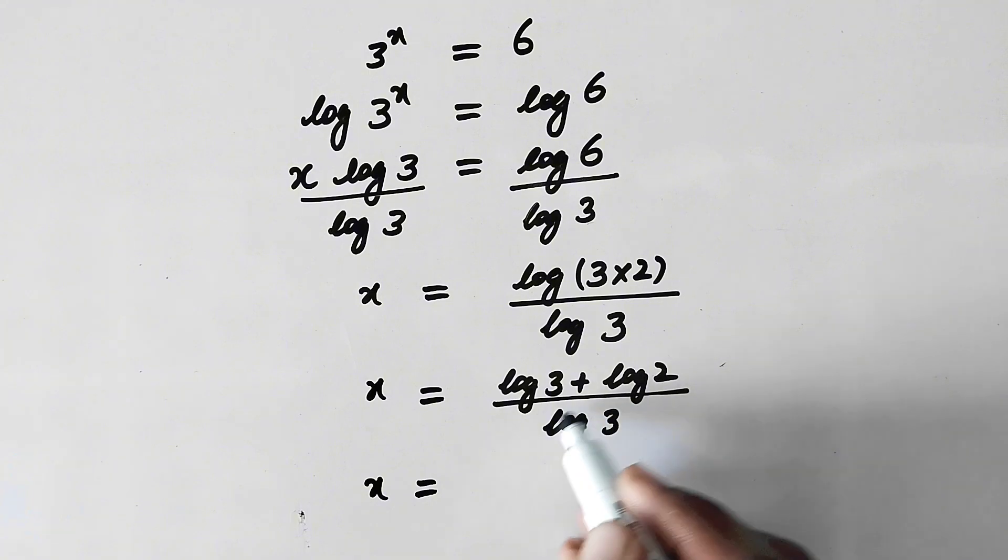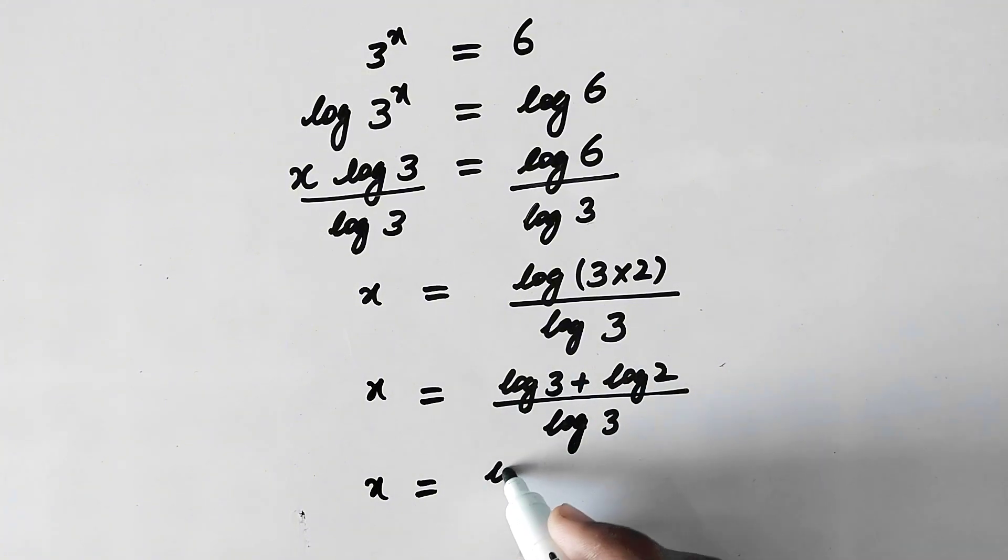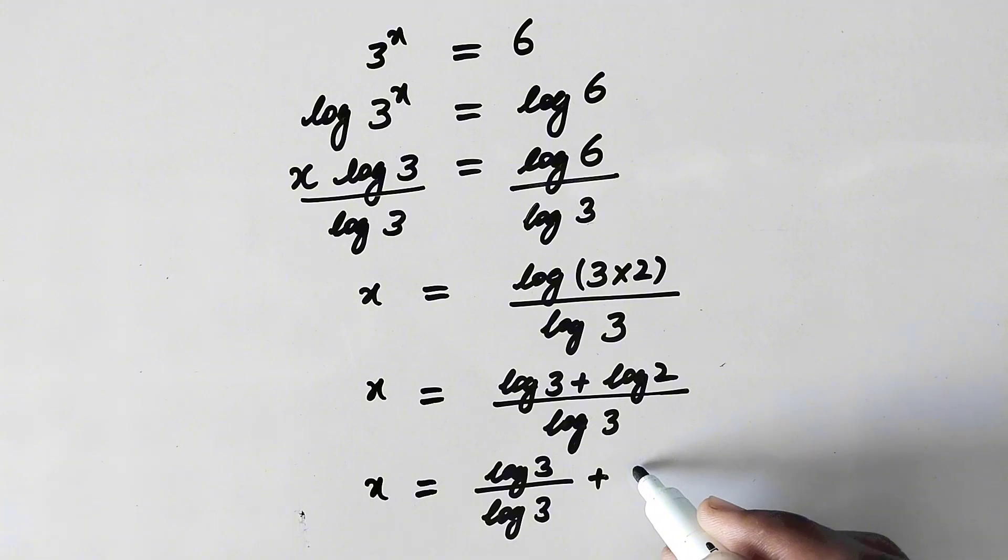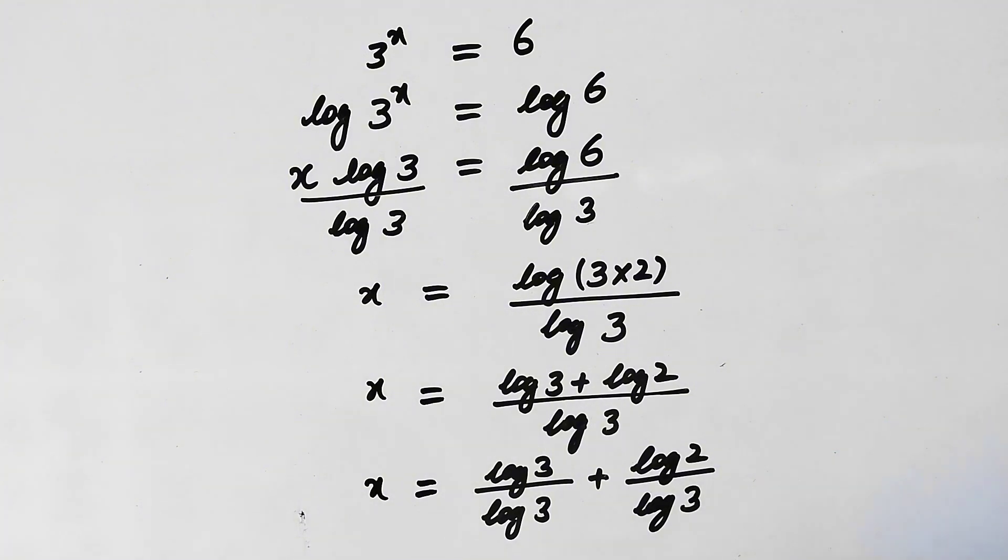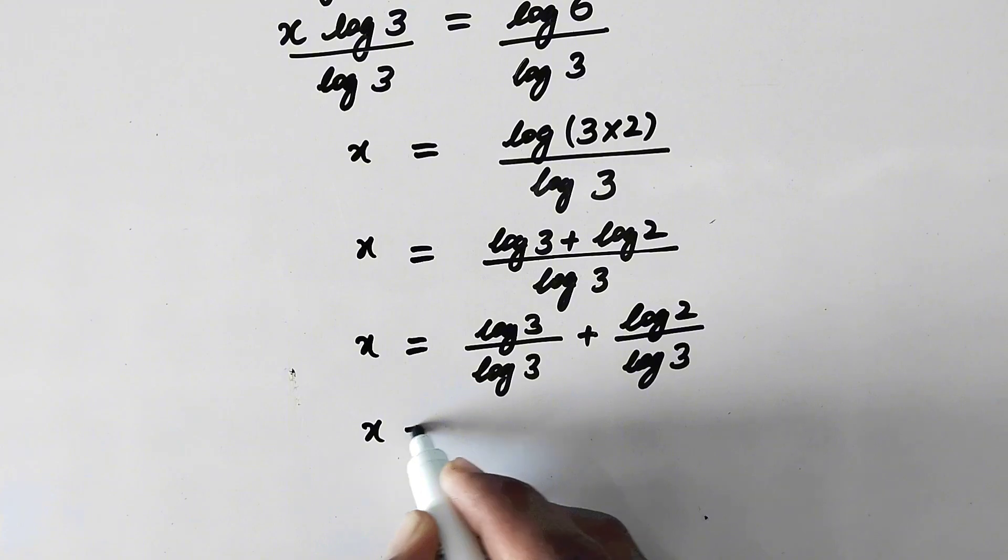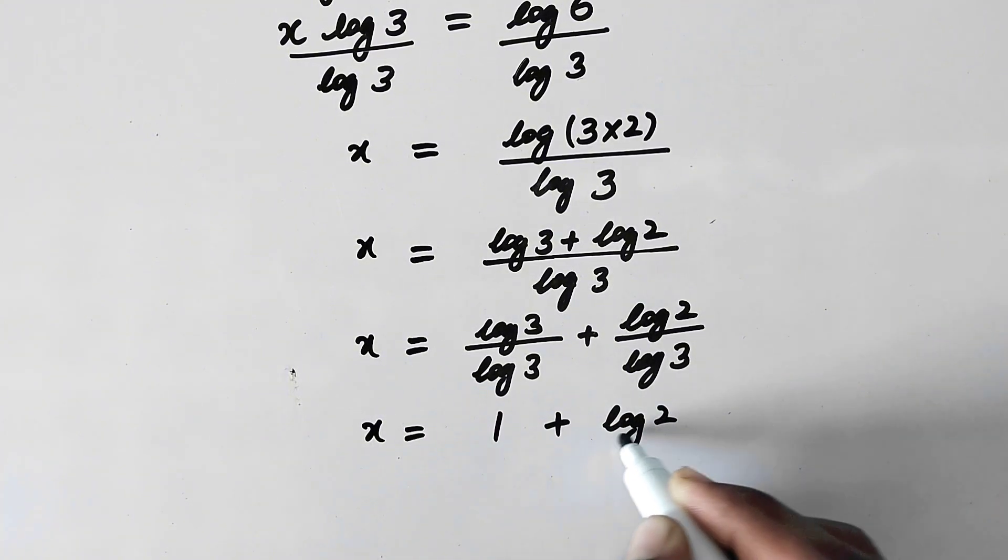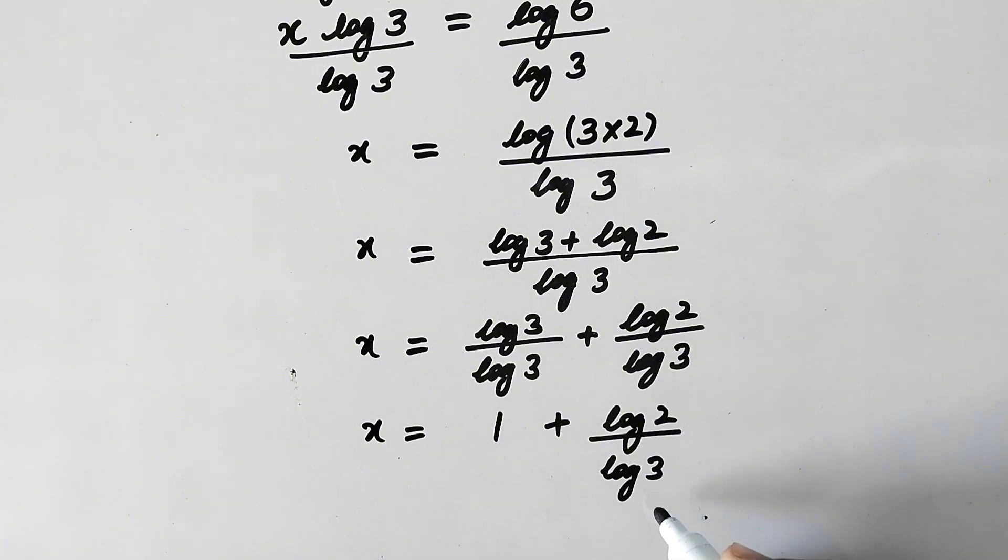In the next step we will write this denominator separately with each term in the numerator. So here will be log of 3 over log of 3 plus log of 2 over log of 3. So now x will be equal to 1 plus log of 2 over log of 3.